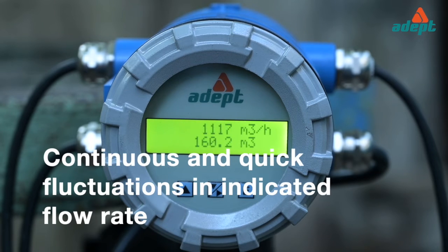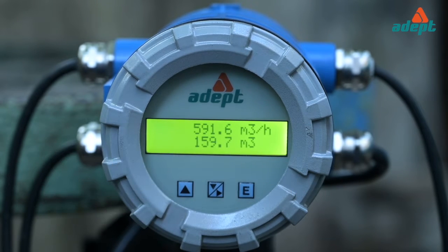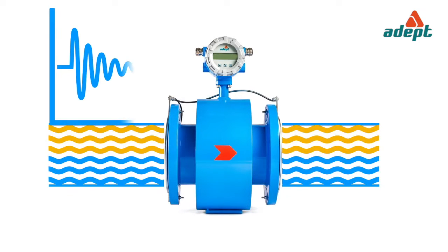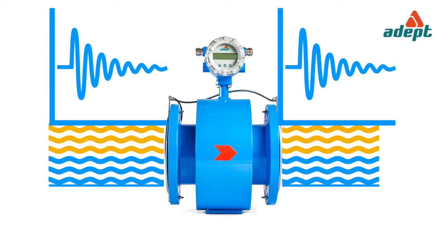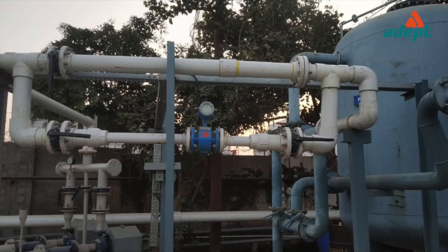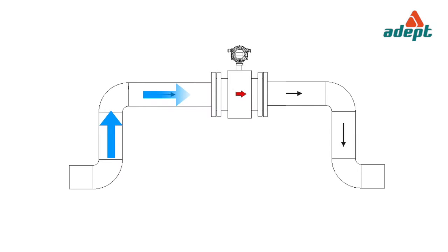Continuous and quick fluctuation in indicated flow rate. Possible causes: damping factor is at a low value; flow is turbulent, pulsating, or changing rapidly; multiple feeder pipes are connected upstream, one of which has pulsating flow; or flow contains bubbles that tend to remain trapped within the flow tube.